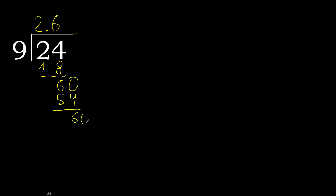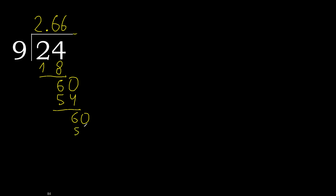Complete. The decimal point is here. 60 minus 54: 9 multiplied by 6 is 54. Subtract.